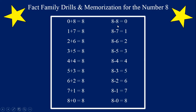Now let's do the subtraction. Eight minus eight equals zero. Eight minus seven equals one. Eight minus six equals two. Eight minus five equals three. Eight minus four equals four. Eight minus three equals five. Eight minus two equals six. Eight minus one equals seven. And eight minus zero equals eight.